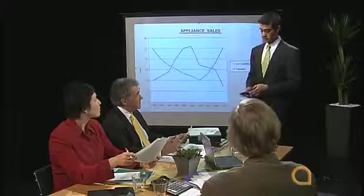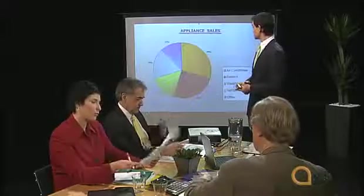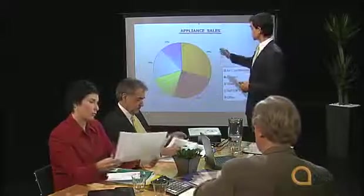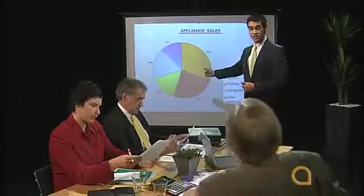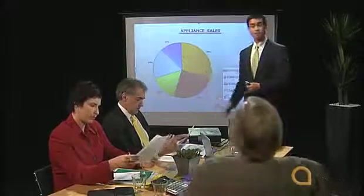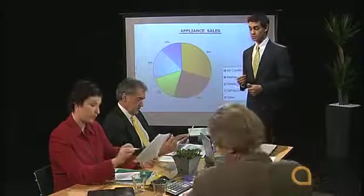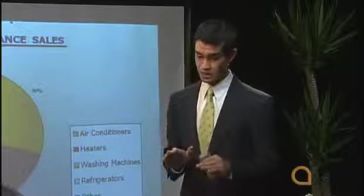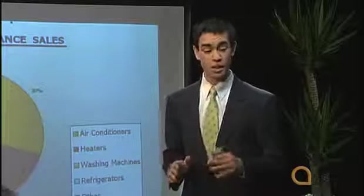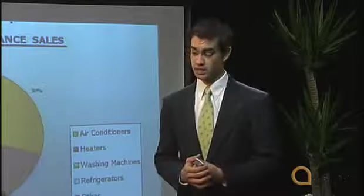Does this explain the fluctuation in total sales? Largely. If we look at this pie diagram, you can see that air conditioners and heaters together represent more than half of our total sales, but they vary seasonally, while other appliances are fairly steady through the year.